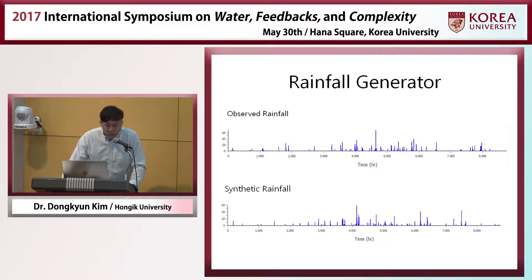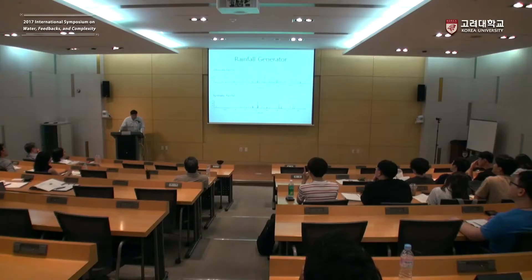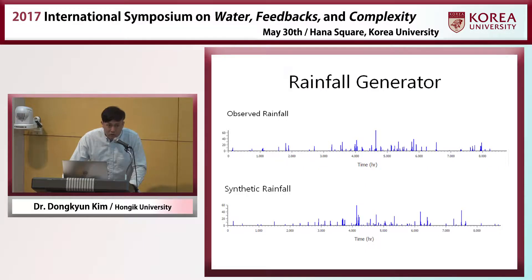For example, a rainfall generator generates a rainfall time series. This is observed rainfall and this is the synthetically generated rainfall using the rainfall generator. Even though they look really different, their statistical characteristics are very similar.